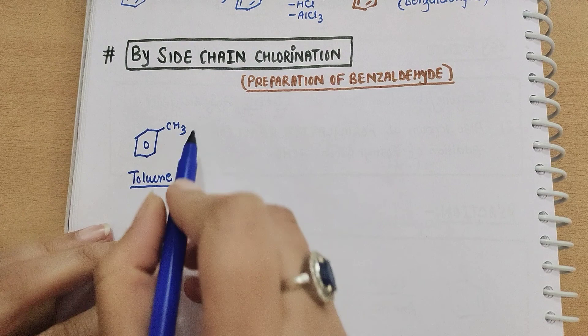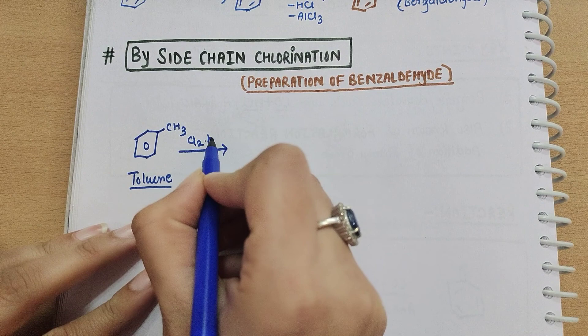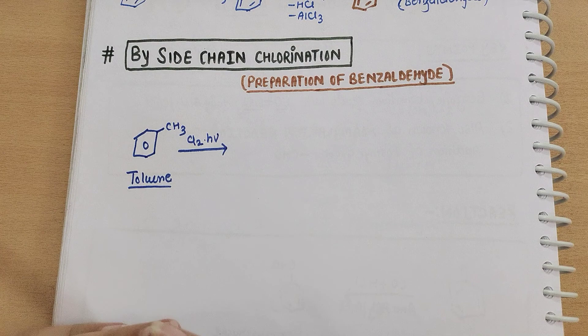You will get benzaldehyde from the hydrolysis. Now let's see how it will happen. Toluene will undergo chlorination in the presence of UV light. This is free radical chlorination.